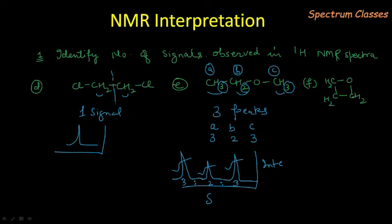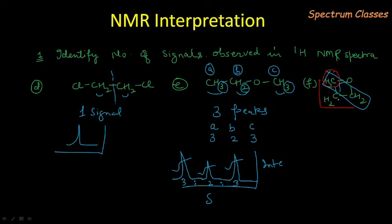The next molecule — here these two protons are of same type, having the same attachment with the molecule. But this carbon is attached to two carbons, whereas this other carbon is attached to one carbon and one oxygen. So these are different attachments — we have two types of signals, A protons and B protons, giving two peaks.